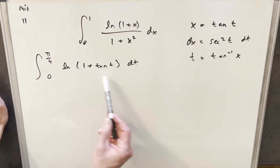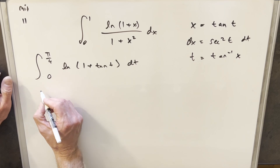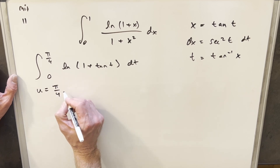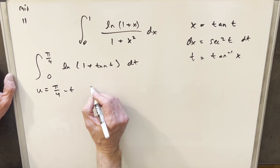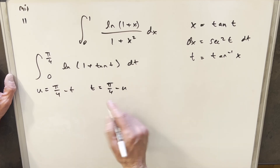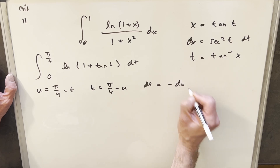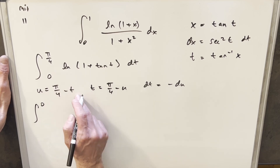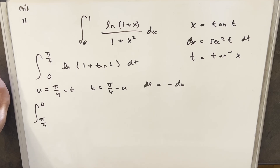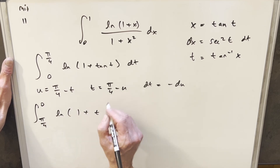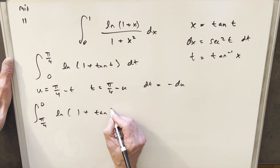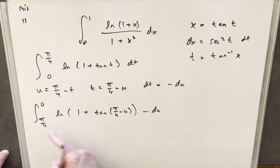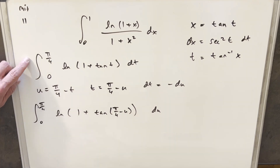Since this is similar to those other integrals, we're going to do the same kind of thing — a u-substitution where we add the two bounds together: pi over 4 plus 0 is pi over 4, so u equals pi over 4 minus t. Then t equals pi over 4 minus u, and dt equals minus du. Plugging in the bounds: pi over 4 gives 0 for the upper bound, and 0 gives pi over 4. Then I take the minus sign and use it to flip the bounds back to what they were.